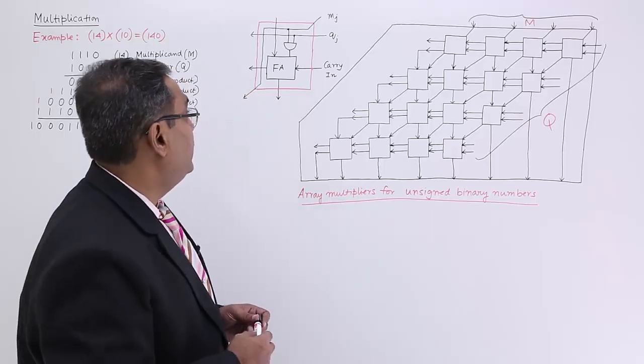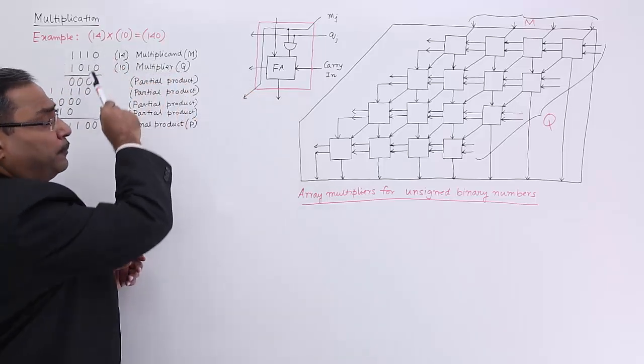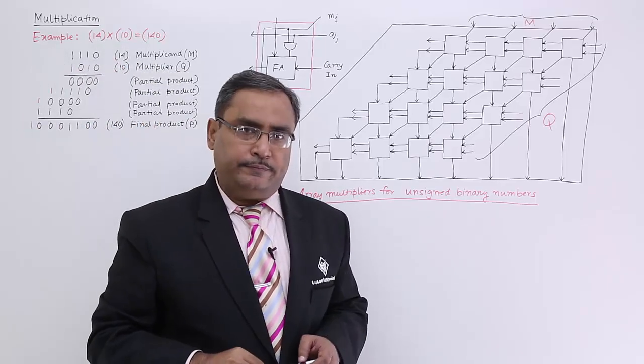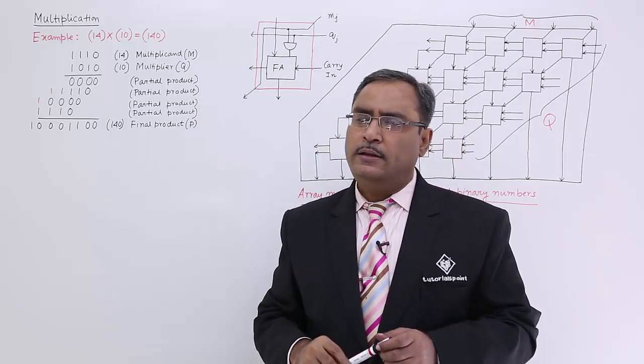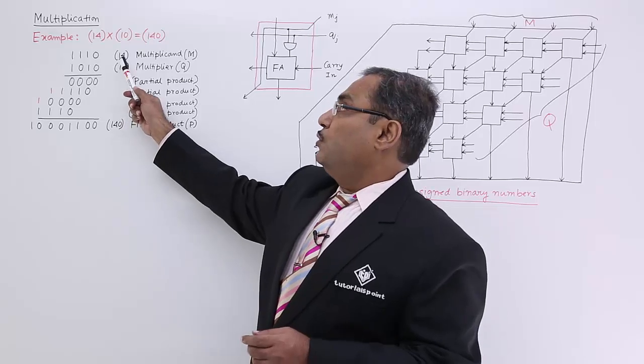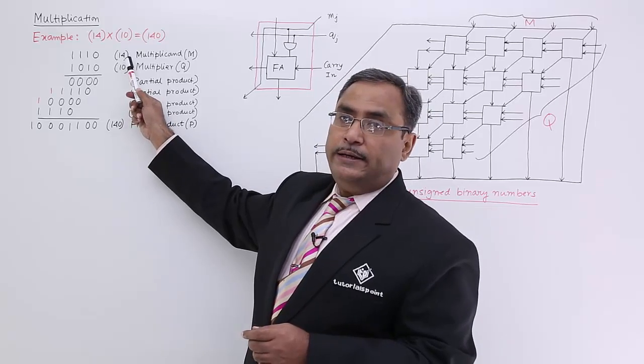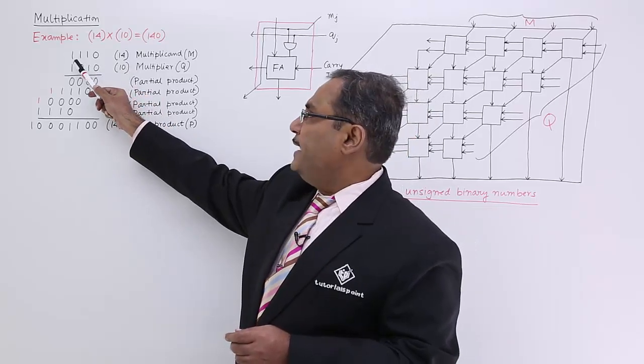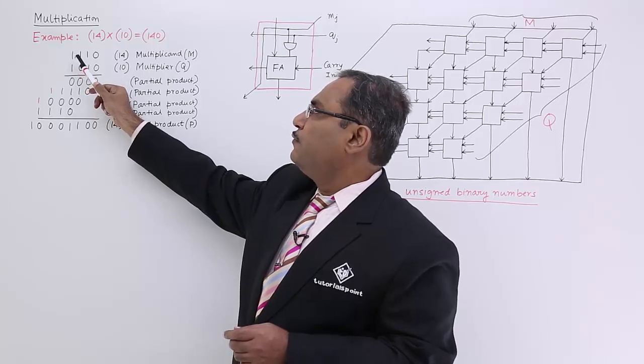Let me go for one example. Suppose we're going to multiply 14 and 10. We know the product will be 140. How to represent 14 in binary number system? 14 means 8 present, 4 present.